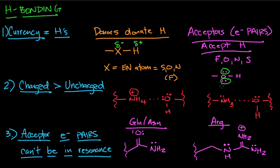One thing that you want to keep in mind is this electron pair has to be localized. It can't be in resonance. We'll discuss this in point three. It has to be localized and available for interaction with the H.